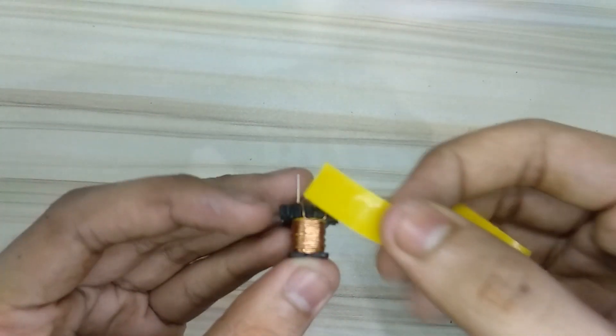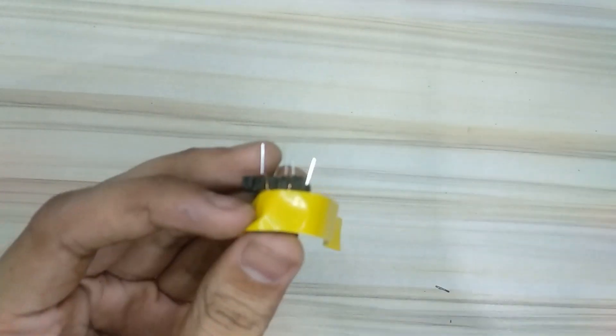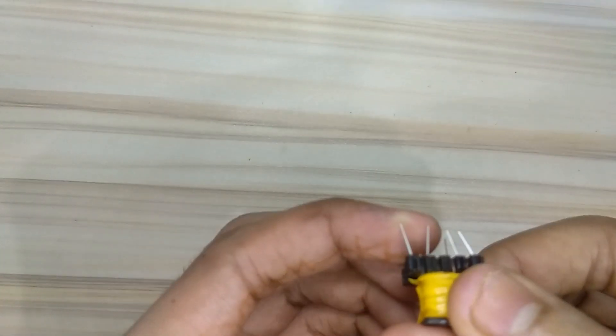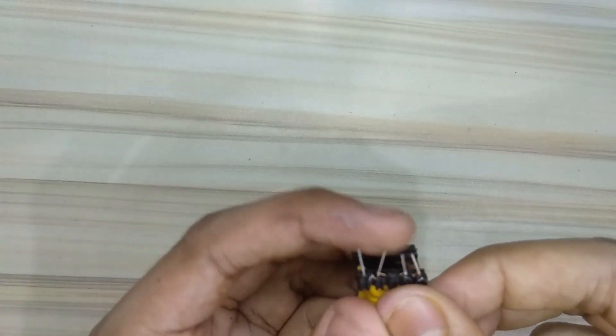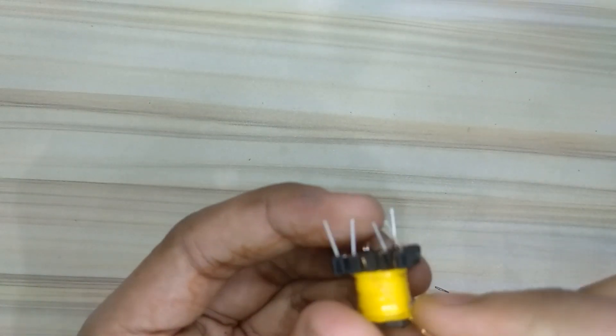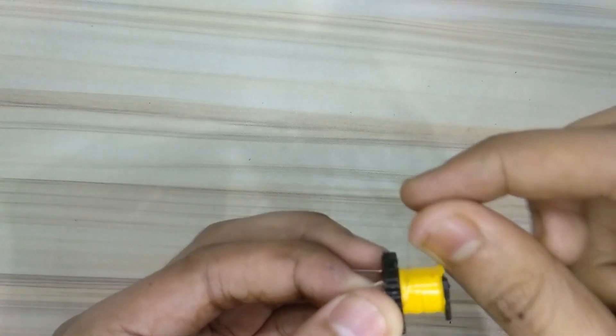Now insulate this winding also. Let's wind the auxiliary winding. This is the starting point, this one. So wind 24 turns in this direction.